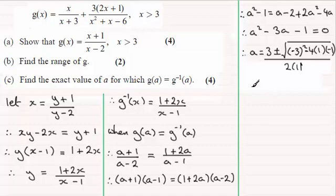And if we clean this up we've got 3 plus or minus the square root of 13, all divided by 2. Now you can see there's two answers for a here: (3 + √13)/2 or (3 - √13)/2, but it does say find the exact value of a so it does suggest there's only one value.